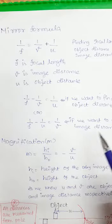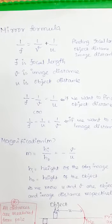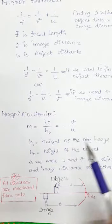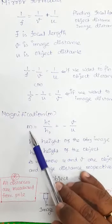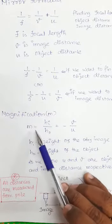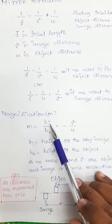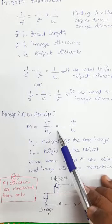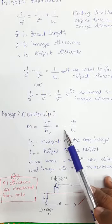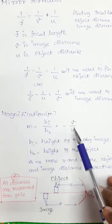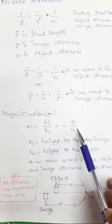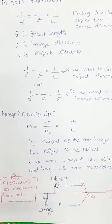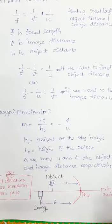Next we are going to see about magnification. Magnification is denoted by small m. It is a ratio of height of the image to height of the object, or otherwise it can be defined as minus v divided by u — the ratio of image distance to object distance.